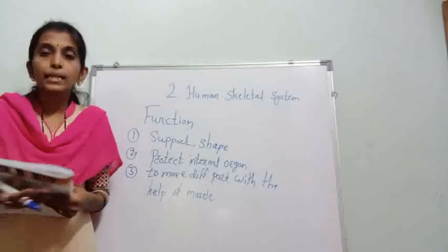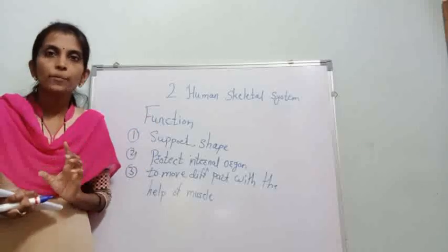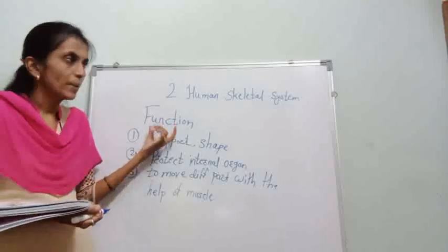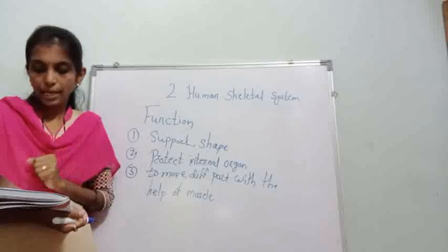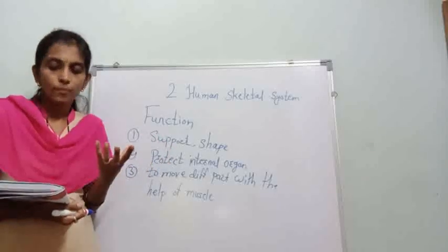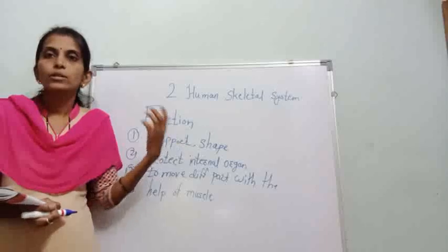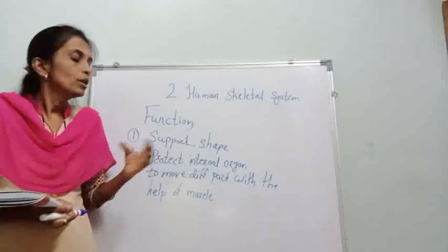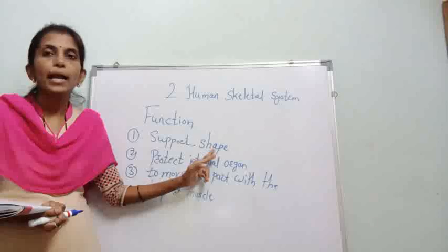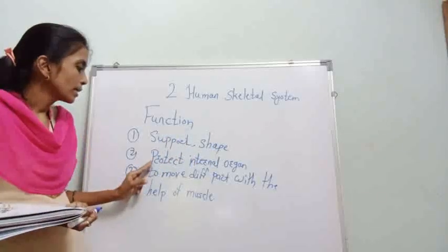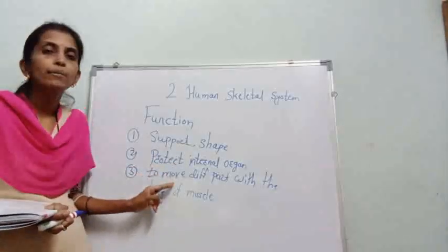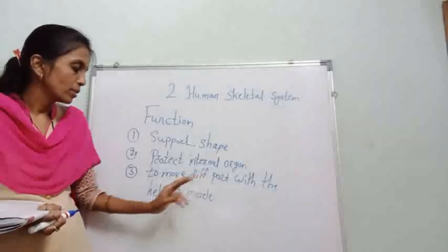So basically the skeleton is made up of bones and joints. Joints are places where two or more bones are attached. When two or more bones are attached to each other, a joint is formed, and that is how our skeletal system is formed. So the three functions are: first, it gives support and shape to the body; second, it protects the internal organs; third, it helps to move different body parts with the help of muscles.